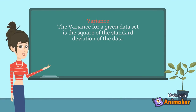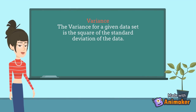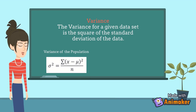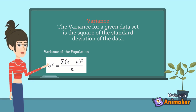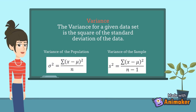Now, let's proceed to variance. The variance of a given data set is the square of the standard deviation of the data. If you want to know the variance of the population, here is the formula: sigma squared equals the summation of the quantity of x minus mu, squared, over n. And if you want to know the variance of a sample, here is the formula: s squared equals the summation of the quantity of x minus mu, squared, all over n minus 1.